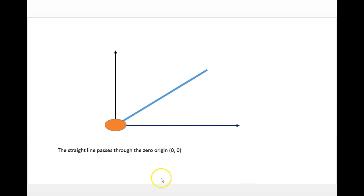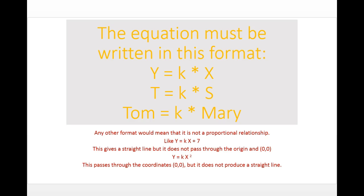The equation must be written in the format y equals k times x, or t equals k times s, or any equivalent pairing. Any other form means we don't have a proportional relationship. For example, y equals k times x plus seven — that seven means the line would cross the y-axis at a location that is not zero, so it does not pass through the origin.